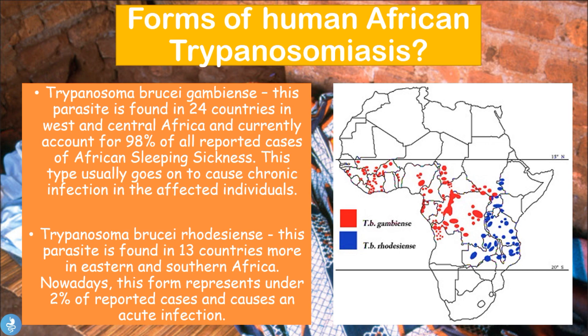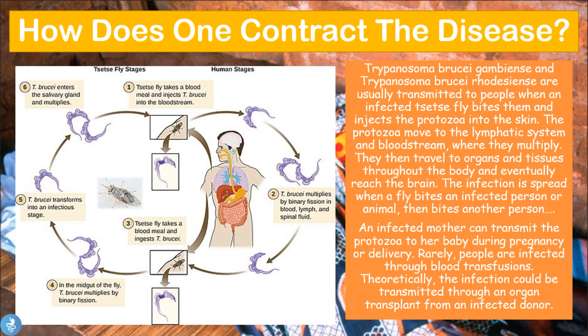Both Trypanosoma brucei gambiensi and rhodiensi are transmitted when an infected tsetse fly bites a person and injects the protozoa into their skin. The protozoa move into the lymphatic system and bloodstream, where they multiply, then travel to organs and tissues throughout the body, eventually reaching the brain. The infection can spread when a fly bites an infected person or animal and then bites another person.